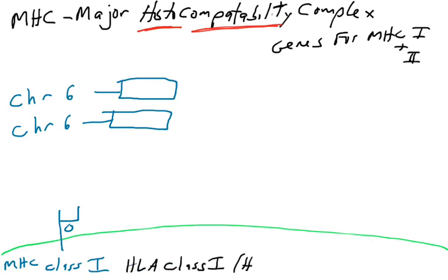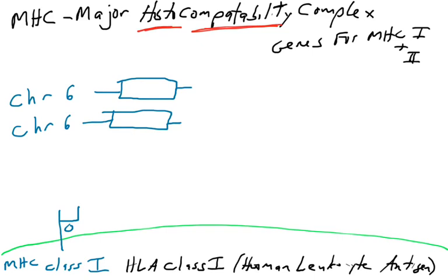Now we're going to add in layers of complexity. First, MHC molecules have alternative names. You'll sometimes see the term HLA class 1, which is the same thing as MHC class 1. HLA stands for human leukocyte antigen. That name comes from the fact that years ago, it was identified that leukocytes have these proteins on their surface. Now we know that HLAs are the MHCs — these names are used interchangeably. Depending on the literature you're reading, it might use one or the other.